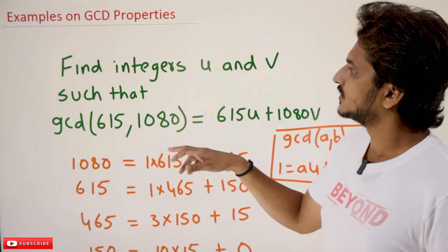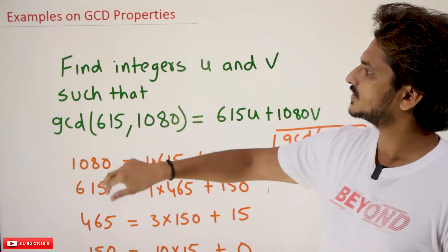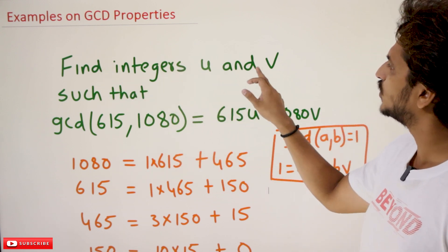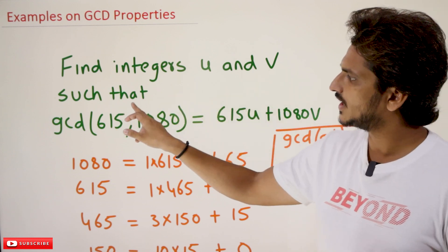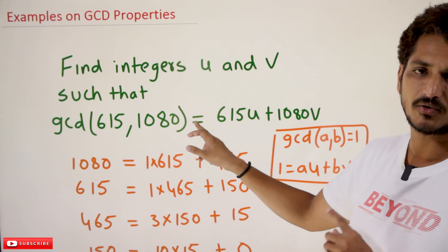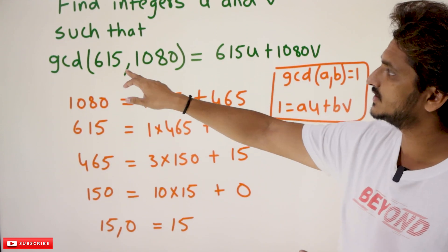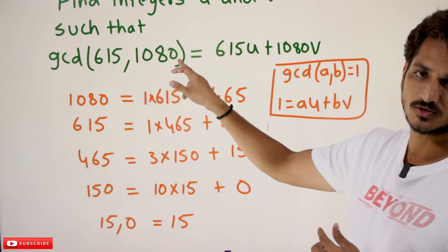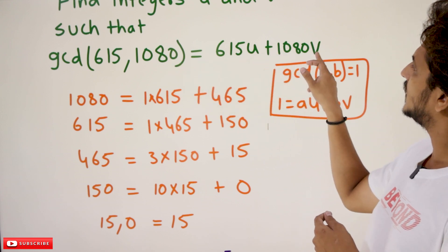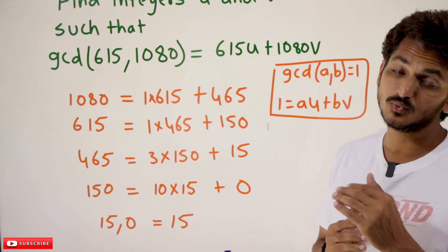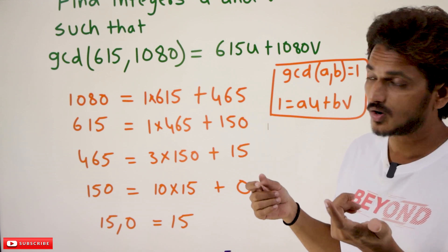For that purpose we have taken this example. Coming to the question: find integers u and v such that GCD(615, 1080) equals 615u + 1080v. It was given that GCD(615, 1080) = 615u + 1080v, and from this we need to identify u and v.